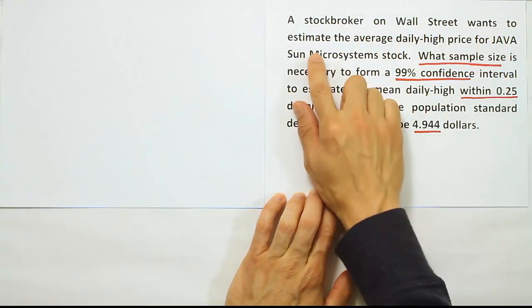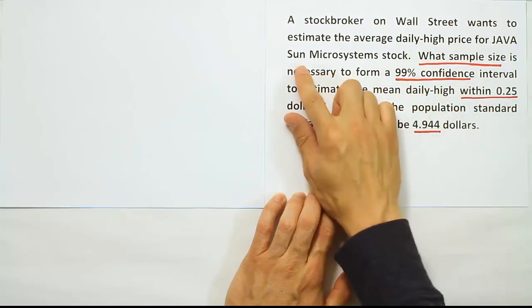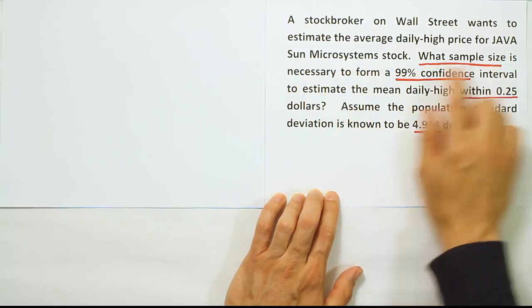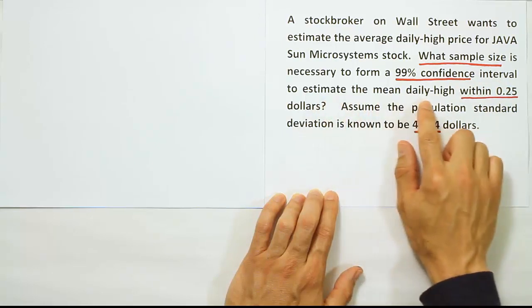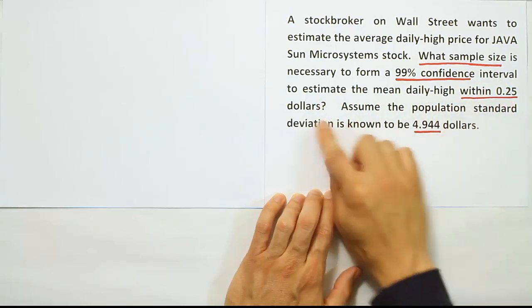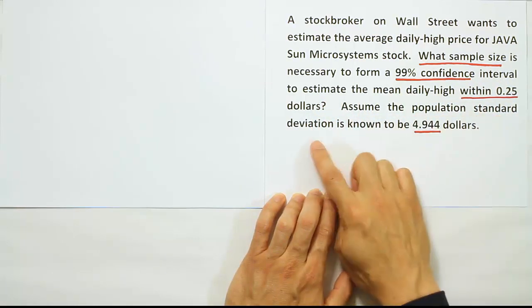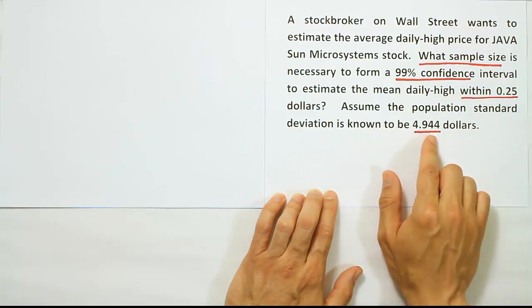A stockbroker on Wall Street wants to estimate the average daily high price for Java Sun Microsystems stock. What sample size is necessary to form a 99% confidence interval to estimate the mean daily high within $0.25? Assume the population standard deviation is known to be $4.944.